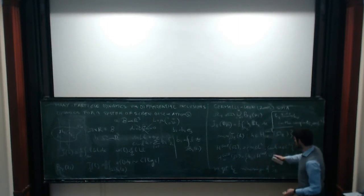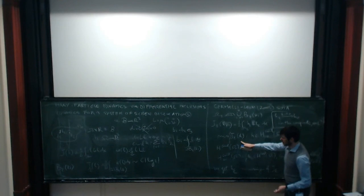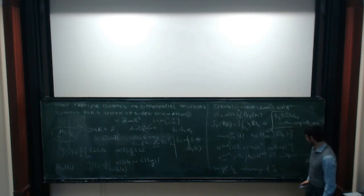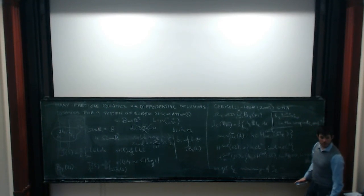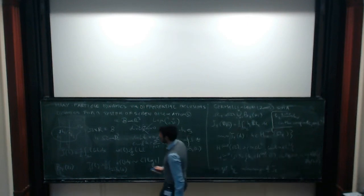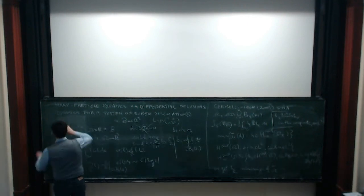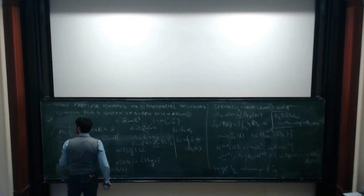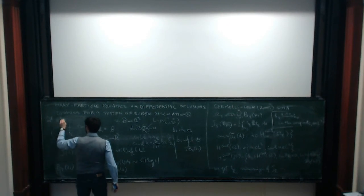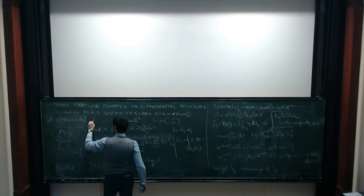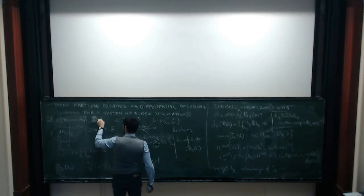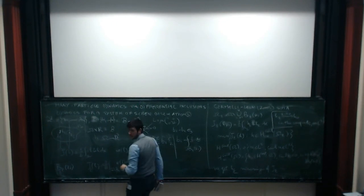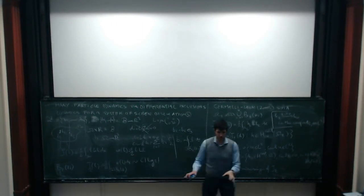Because the functional is nice and quadratic, we have a unique minimizer. The data determining h0 is the collection of N dislocations and the set of Burgers vectors. Given the positions of the dislocations with their Burgers vectors, the goal is to see how they evolve dynamically.